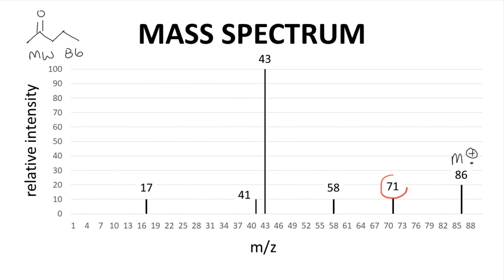We see a peak at 71. That would be a loss of 15, a methyl, from the parent ion. Let's draw that parent ion. We could lose the methyl through a radical site-initiated fragmentation to give that as the fragment cation with an Mz of 71 because it's lost a methyl radical 15.